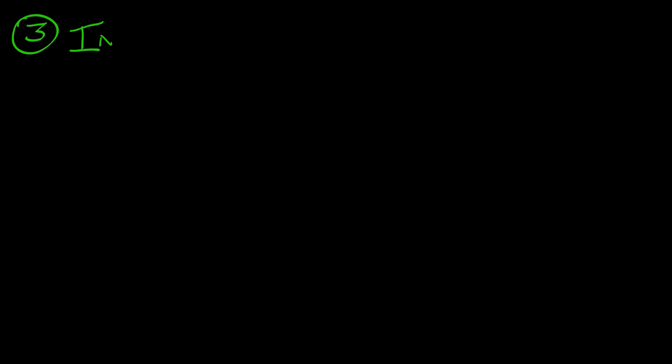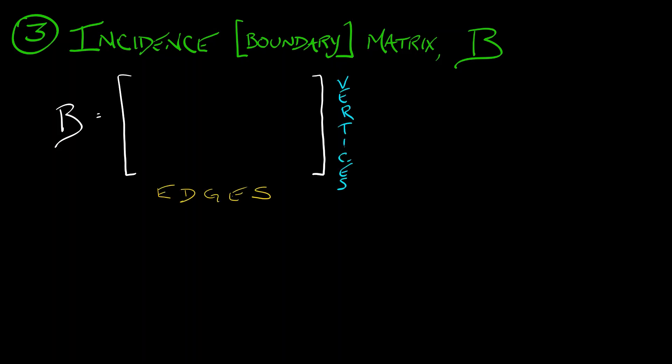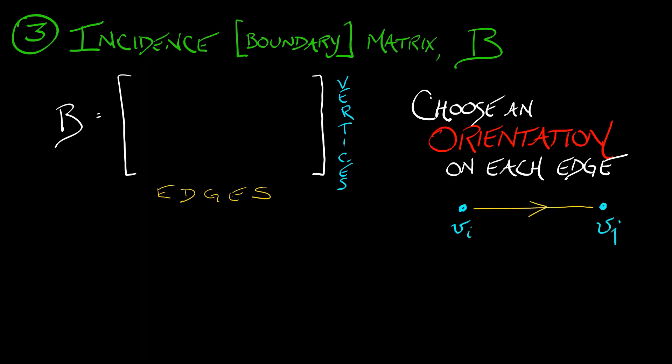One example of a non-square matrix that we are going to be interested in is the incidence matrix, also called the boundary matrix of our graph. This matrix B is defined as follows. The rows are based on the vertices, and the columns are based on the edges. Now, what are the entries of this matrix? What we need to do is choose an orientation on this edge. Make it a directed graph. Do so in any way you like. It's not going to matter. Then, given that edge that goes from vertex i to vertex j, the corresponding column of the incidence matrix is going to have a positive one at the j-th entry and a negative one at the i-th entry, with all other entries in that column being zero.